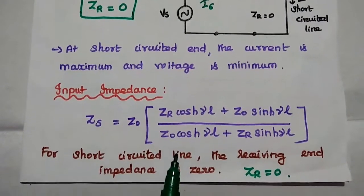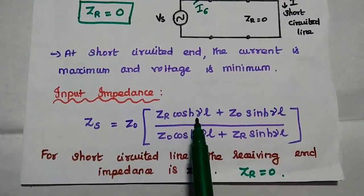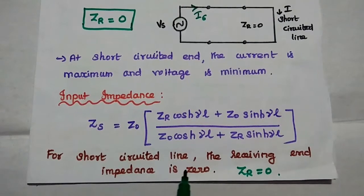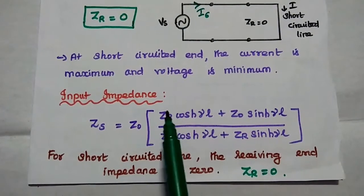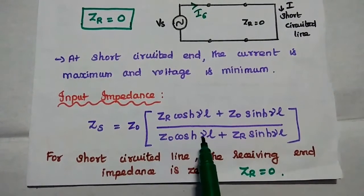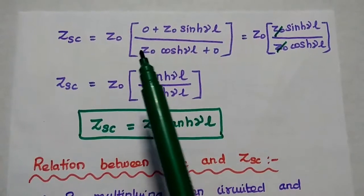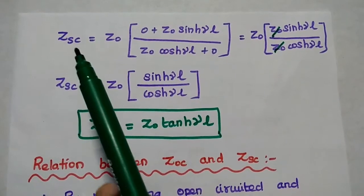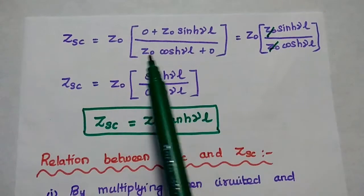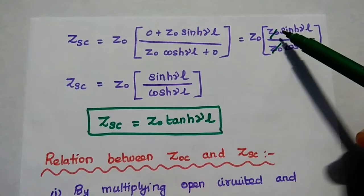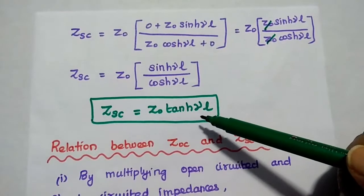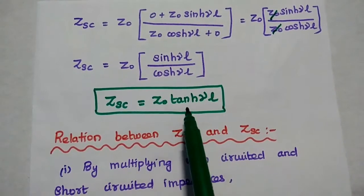Next, we are going to derive the input impedance for this short circuit line. Zs is equal to Z0 into ZR·cosh(γL) plus Z0·sinh(γL), divided by Z0·cosh(γL) plus ZR·sinh(γL). For short circuit line, the receiving end impedance is 0. We can directly put ZR equal to 0 in this equation. Then we get Z0 into Z0·sinh(γL) divided by Z0·cosh(γL). Z0 and Z0 divide each other, giving Z0 into sinh(γL) divided by cosh(γL). Sin over cos is nothing but tan. So the final answer is Z_SC is equal to Z0·tanh(γL).